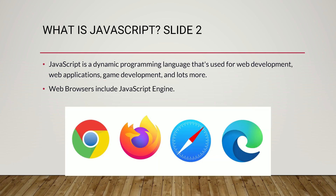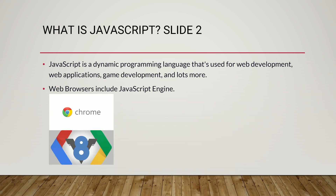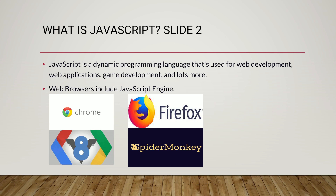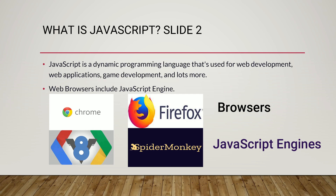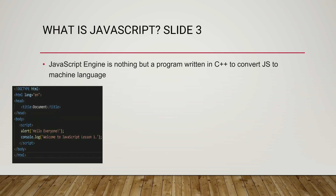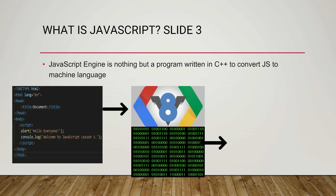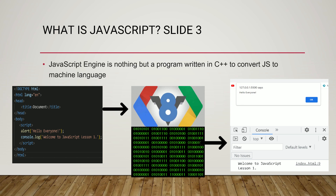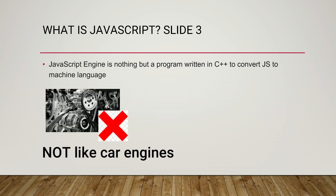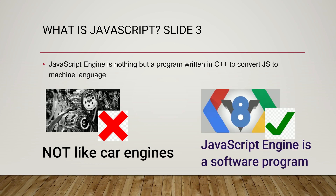Web browsers include a JavaScript engine. Google Chrome uses the V8 JavaScript engine. Firefox browser uses SpiderMonkey. The JavaScript engine is nothing but a program written in C++ to convert JavaScript to machine language.